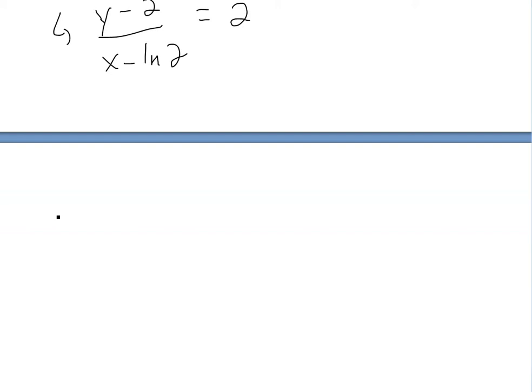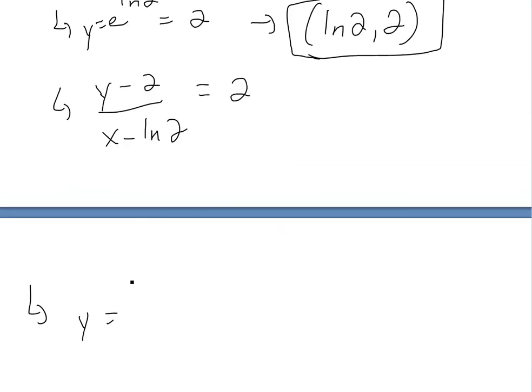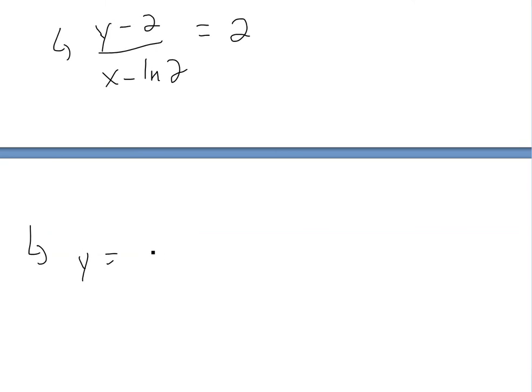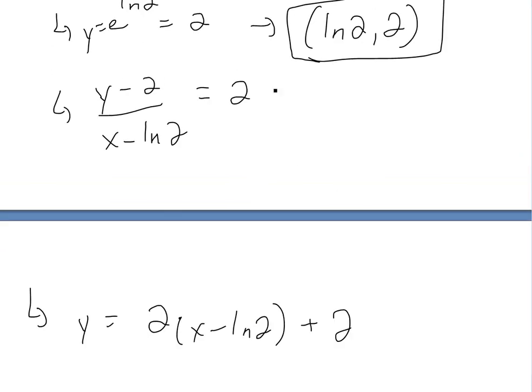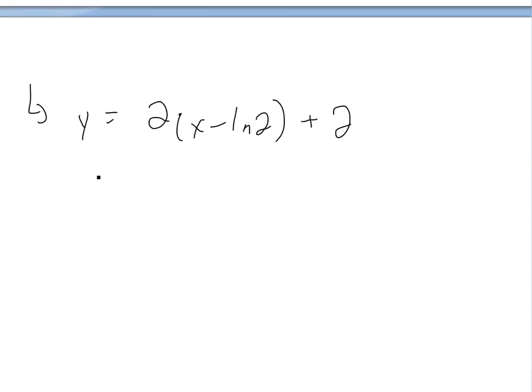So for any arbitrary x and y function we'll get, put this on the right side. We'll have y equals 2 times open bracket x minus ln 2 close bracket, and then plus 2 here. We just shift this 2 on the right side, so we solve for y. And this would be our equation.